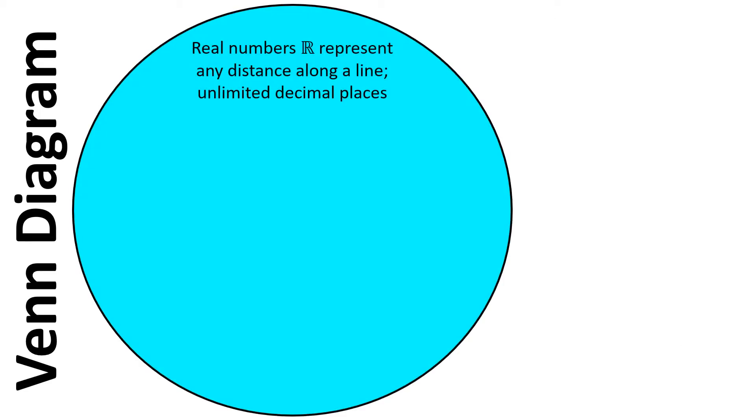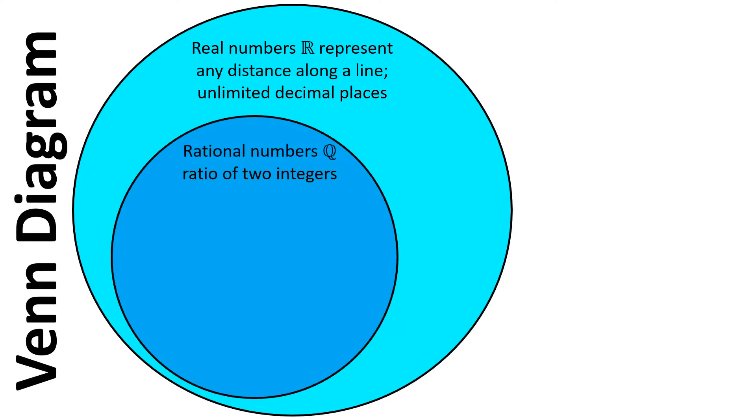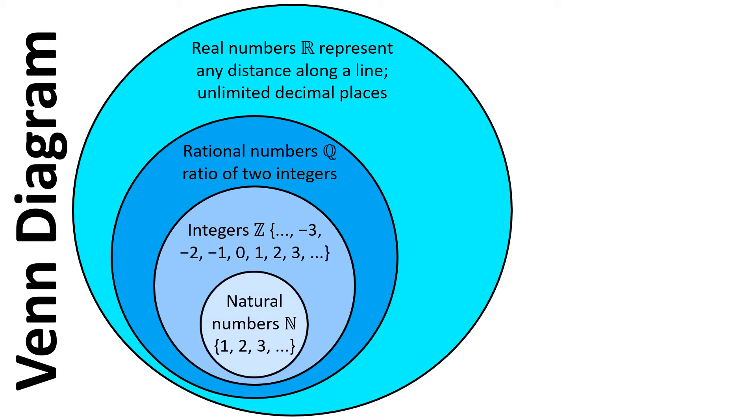If we think about these different groups using a Venn diagram, we've got the real numbers. Then a subset of this are the rational numbers. A subset of the rational numbers are the integers. A subset of the integers are the natural numbers. And we also have the irrational numbers.